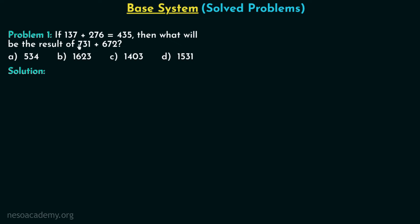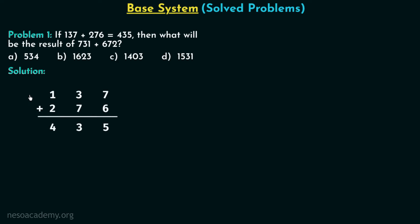Two additions are given and the result of the first addition is already provided. We need to find the result of the second addition. If we carelessly perform this in the decimal number system we get 1403, but we should not mark that as the answer. We must first confirm the number system by finding its base, which we can determine from the first complete addition.